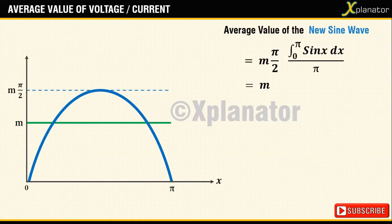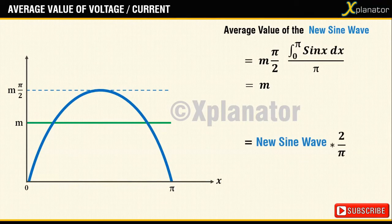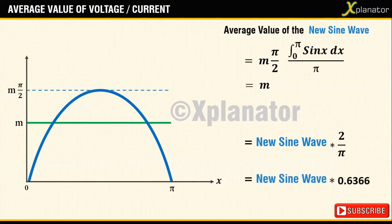In simple words, if you take a sine wave and multiply it by 2 by pi, you will get the average value of that sine wave.